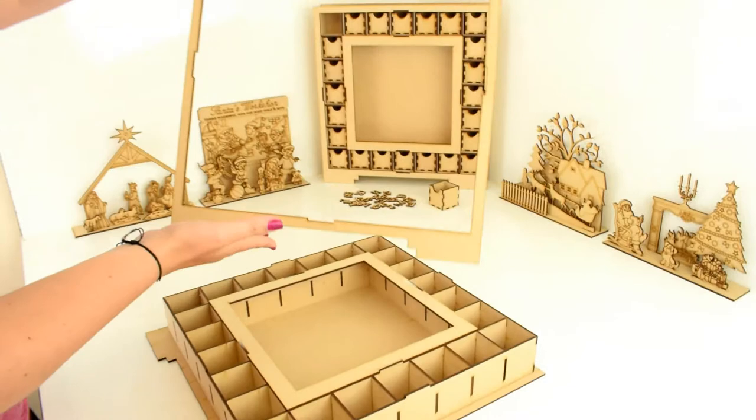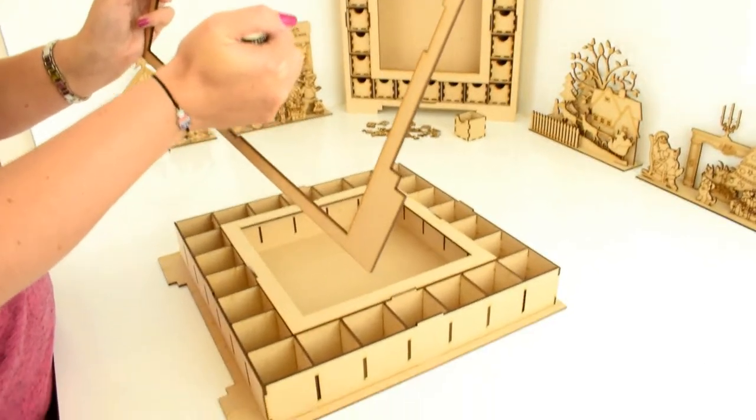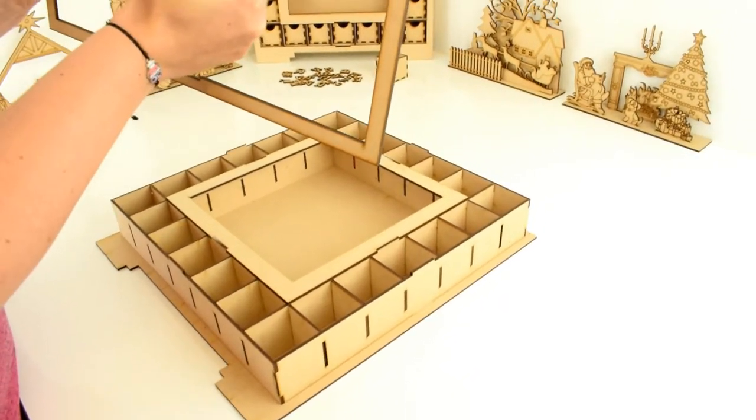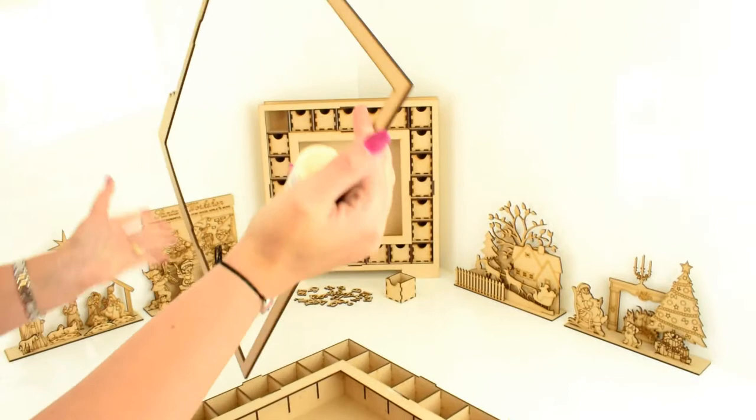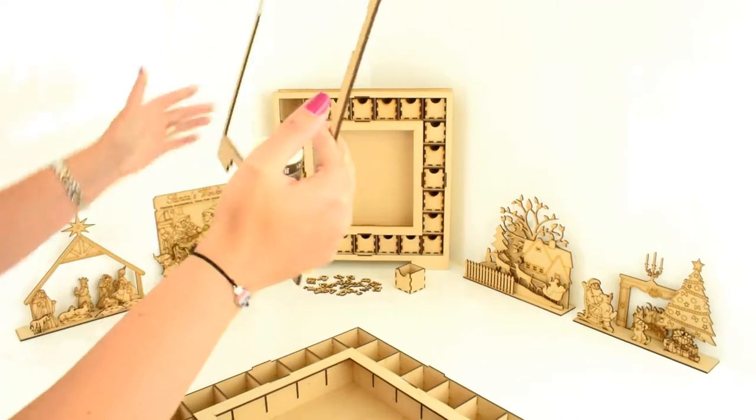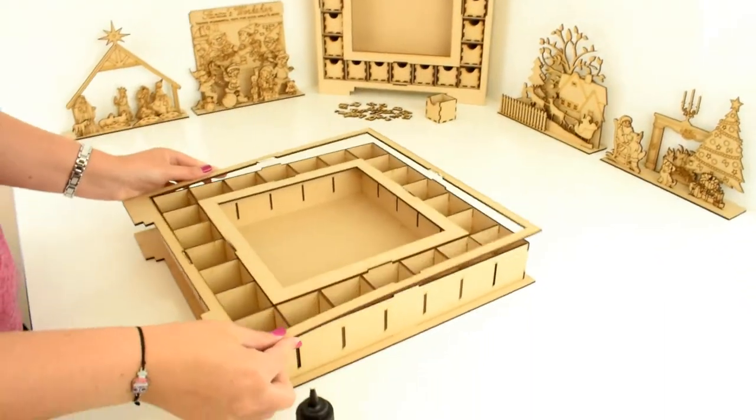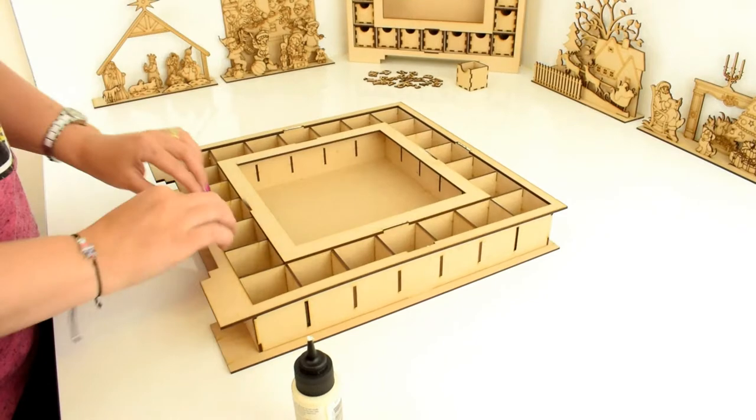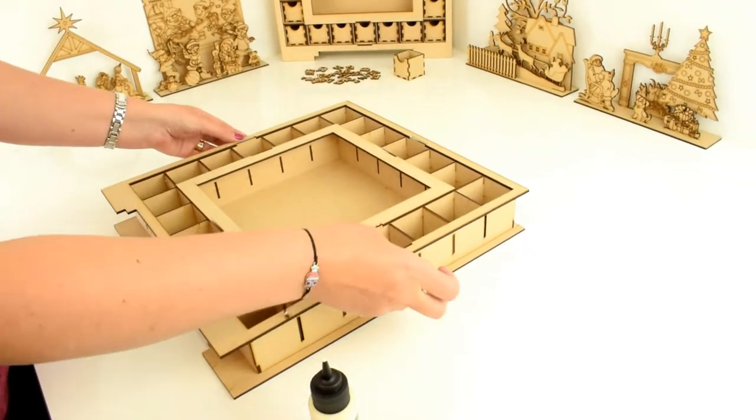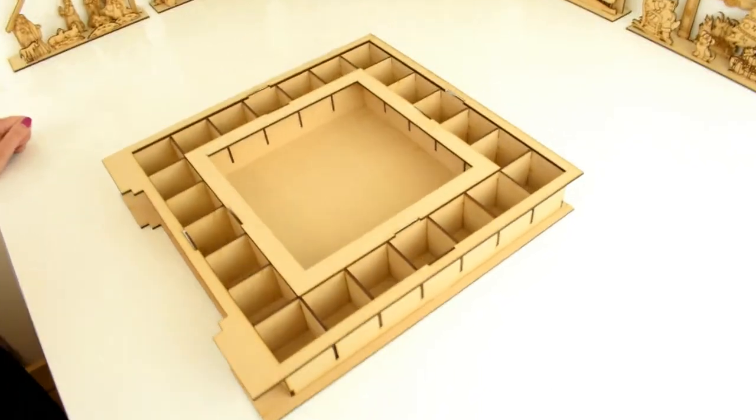Wipe away any excess glue. Take the outer frame and again apply wood glue to all these cut out areas. Slot onto the outer edge and push down. This is now complete.